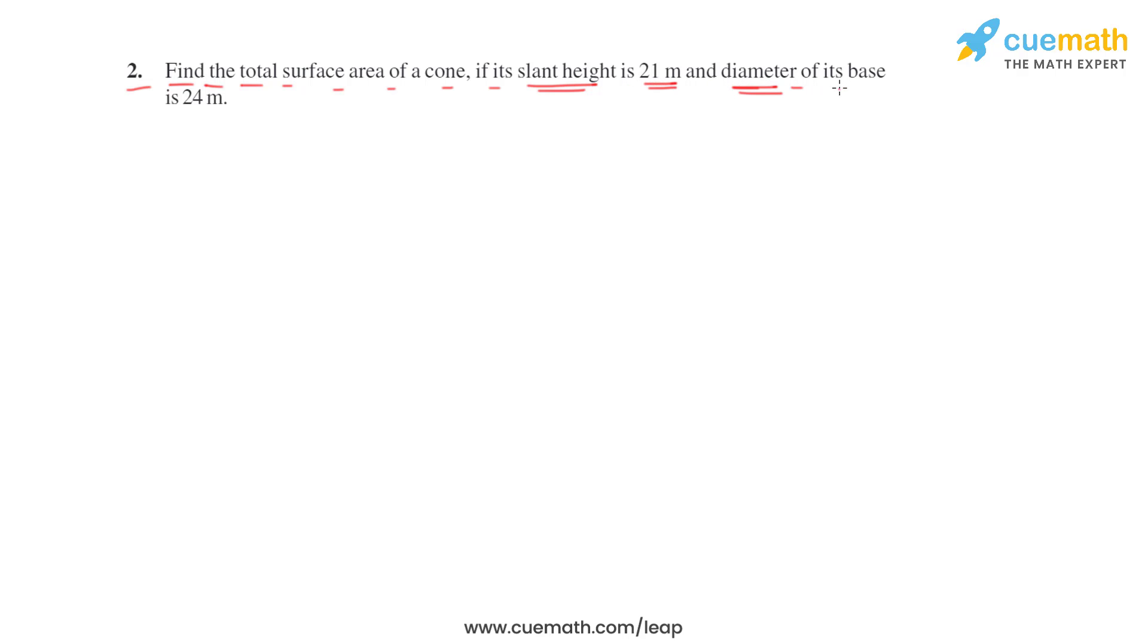So slant height is given 21 meters and diameter of base is given 24 meters, and we have to find the total surface area. Here you can see the slant height is given and the diameter of base is given.